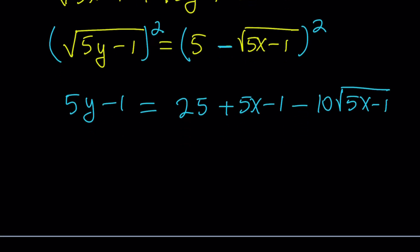Now, this can be simplified a little bit, but first of all, we can get rid of the negative 1 and then write our expression. And one of the good things about after canceling out the negative 1 is every term is divisible by 5, which is kind of nice. So we can go ahead and divide everything by 5 and this gives us y equals 5 plus x minus 2 times the square root of 5x minus 1.